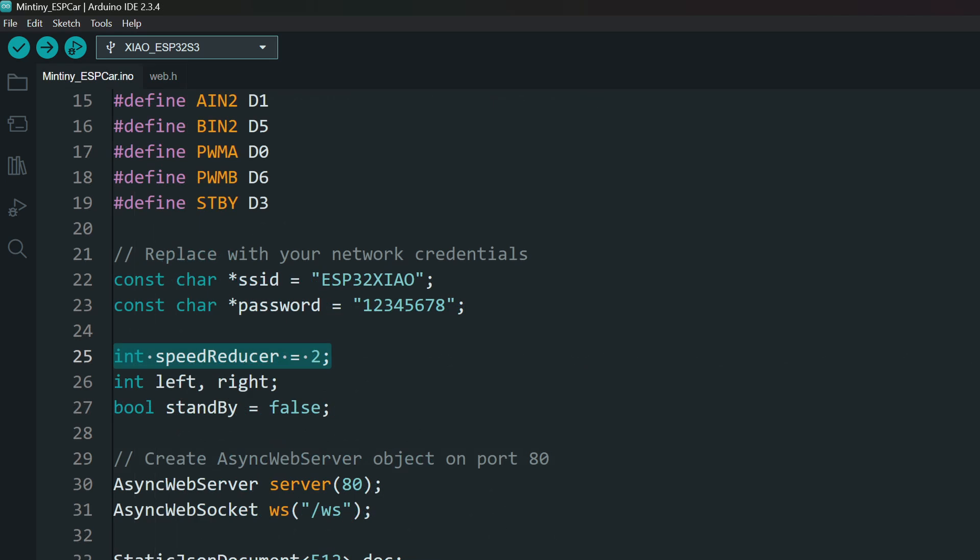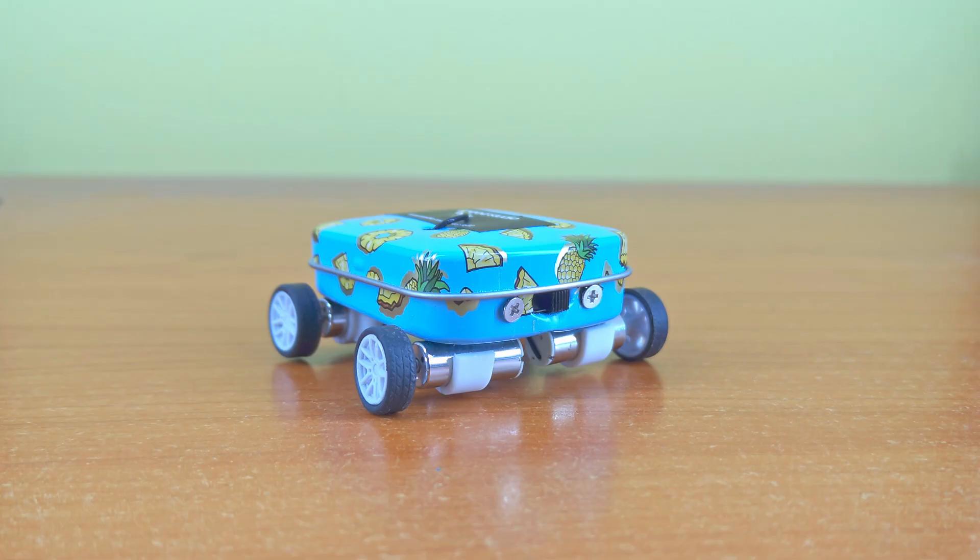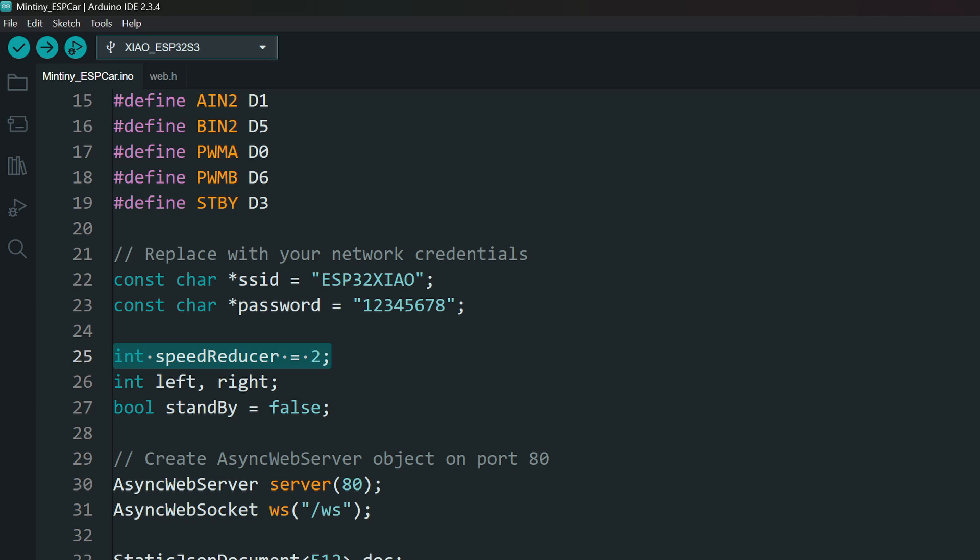To decrease the speed of the car, use this variable. The higher this value, the slower the car runs, because at full speed, the little feller is pretty uncontrollable. Then you can just upload the code.